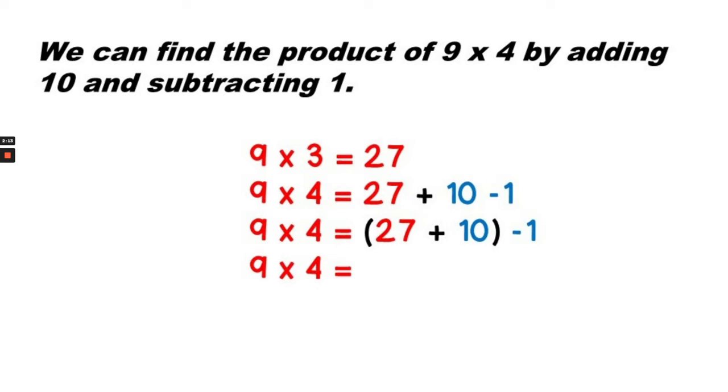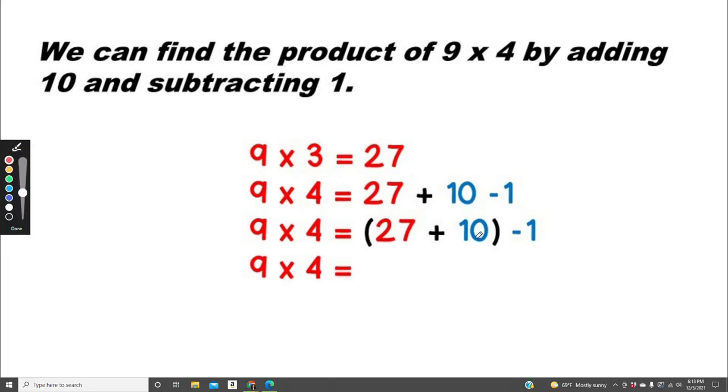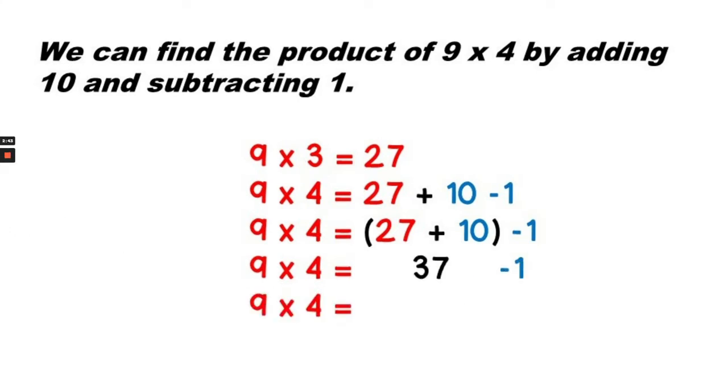We can find the product of 9 times 4 by adding 10 and subtracting 1. So 9 times 3 equals 27. 9 times 4 equals 27 plus 10 minus 1. 27 plus 10 is 37 minus 1. 9 times 4 equals 36.